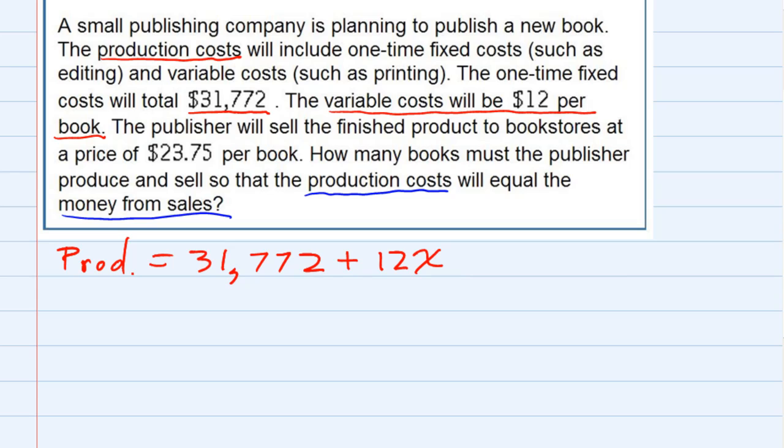That's our 12 times X. That's our production cost. And then we also have some sales, which is $23.75 per book. Whenever we sell it, we get $23.75. It's also per book, so that's also times X, where X is the number of books.